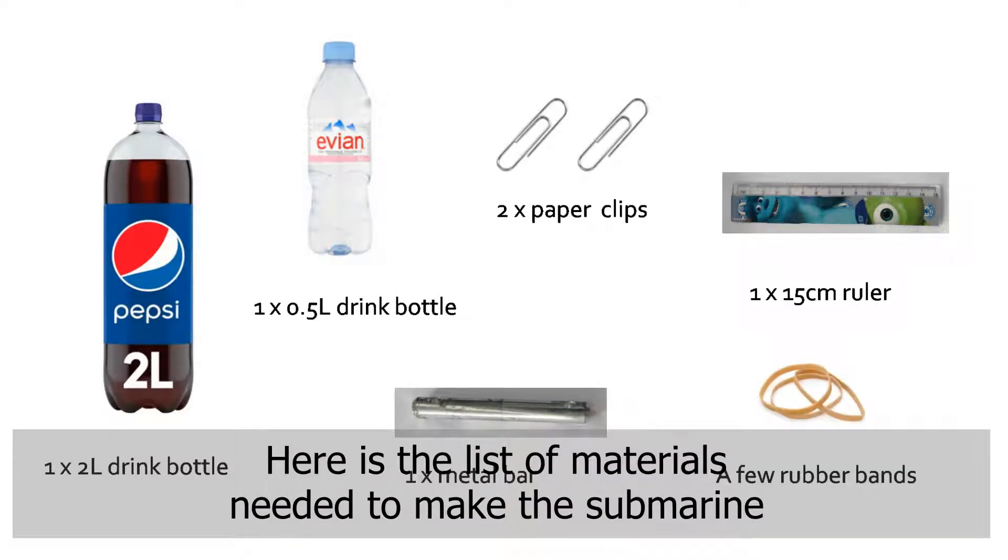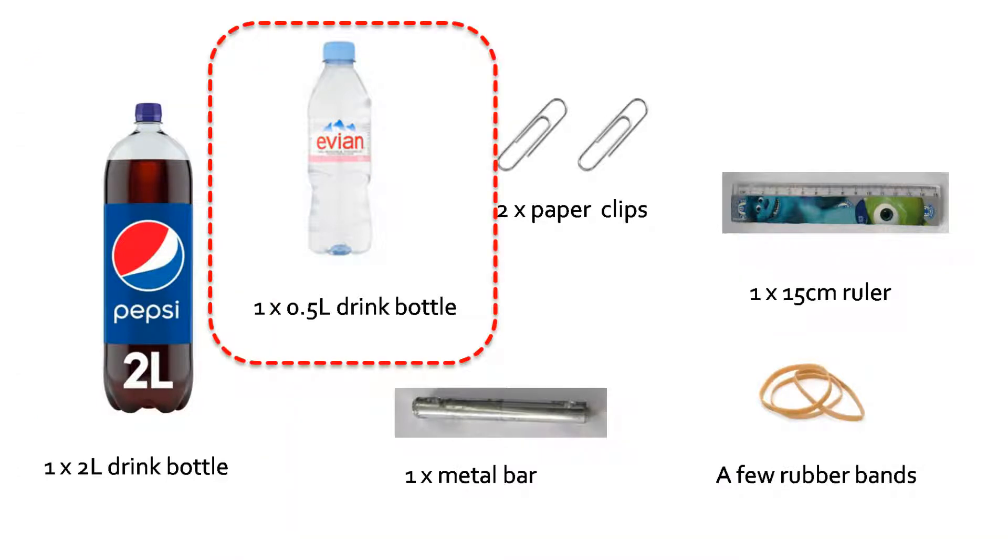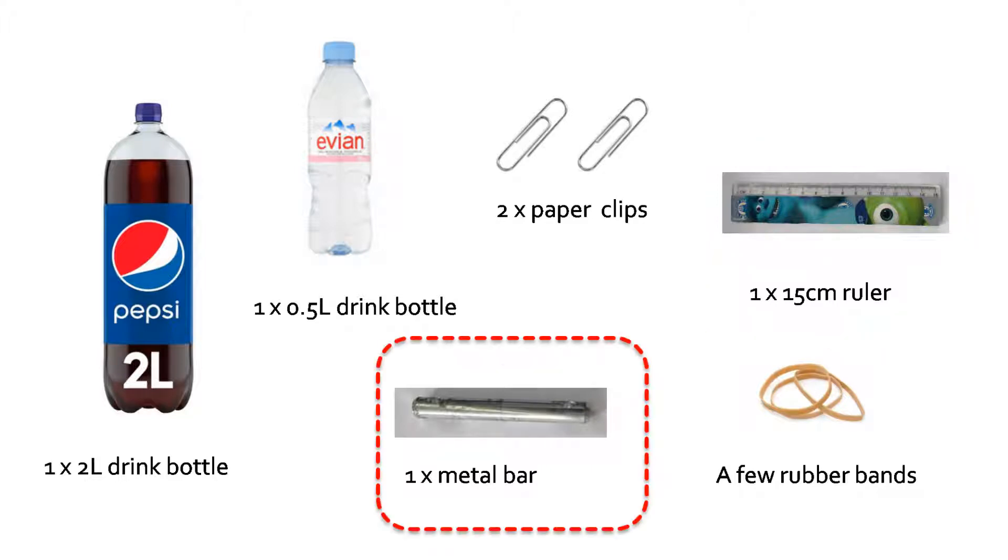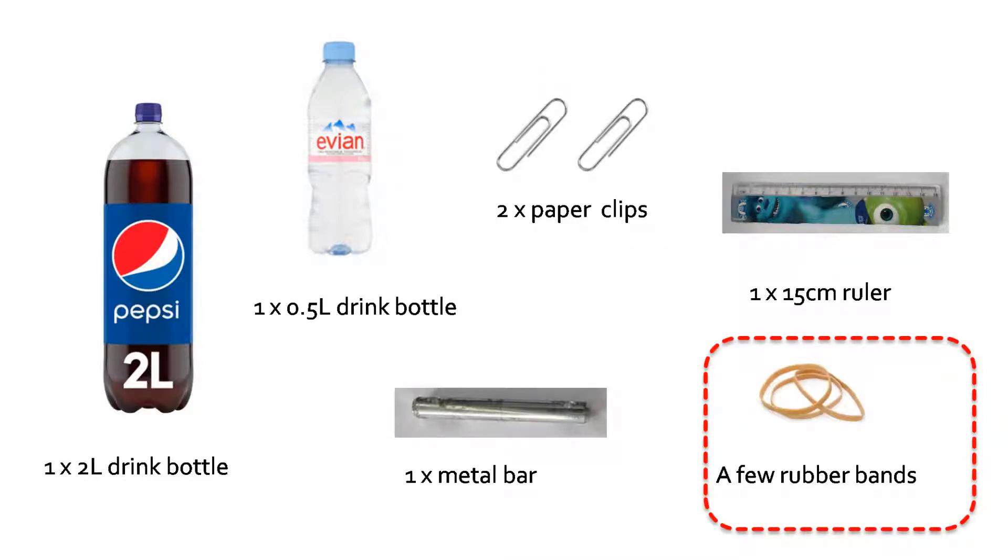Here is a list of materials needed to make the submarine: a two-liter drink bottle, a 0.5-liter drink bottle, a 15-centimeter ruler, a metal bar, two paper clips, and a few rubber bands.